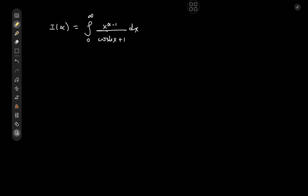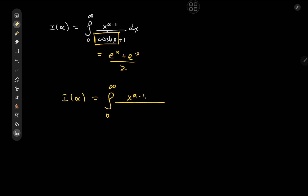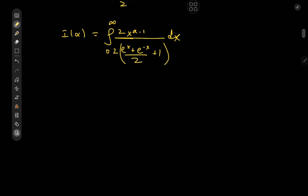How do we evaluate this thing? The hyperbolic cosine function can be expanded as e to the x plus e to the negative x over 2. So I'm going to write I(α) as the integral from 0 to infinity of x to the α minus 1 divided by (e to the x plus e to the negative x) over 2 plus 1 dx. Multiplying through by a factor of 2 gives twice the integral from 0 to infinity of x to the α minus 1 over e to the x plus e to the negative x plus 2 dx.